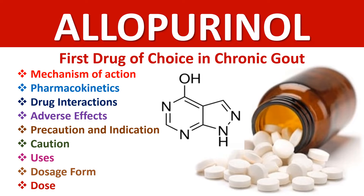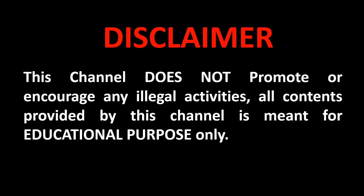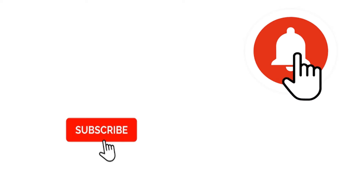Let us learn and understand about the drug allopurinol, which is the first drug of choice in chronic gout. We will be covering all sections regarding allopurinol. First, we will see what actually gout is.